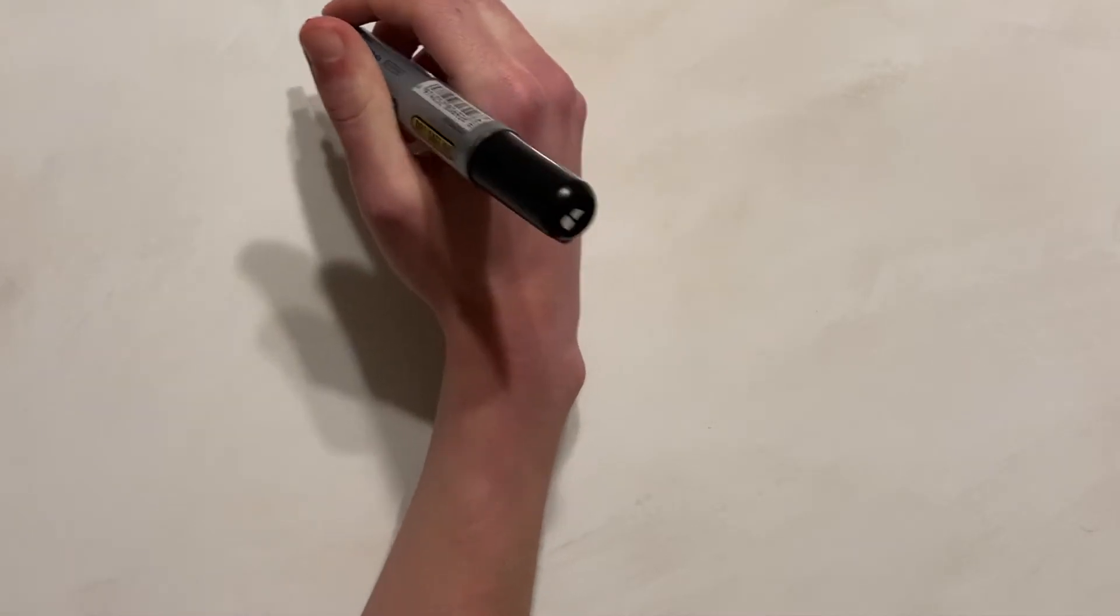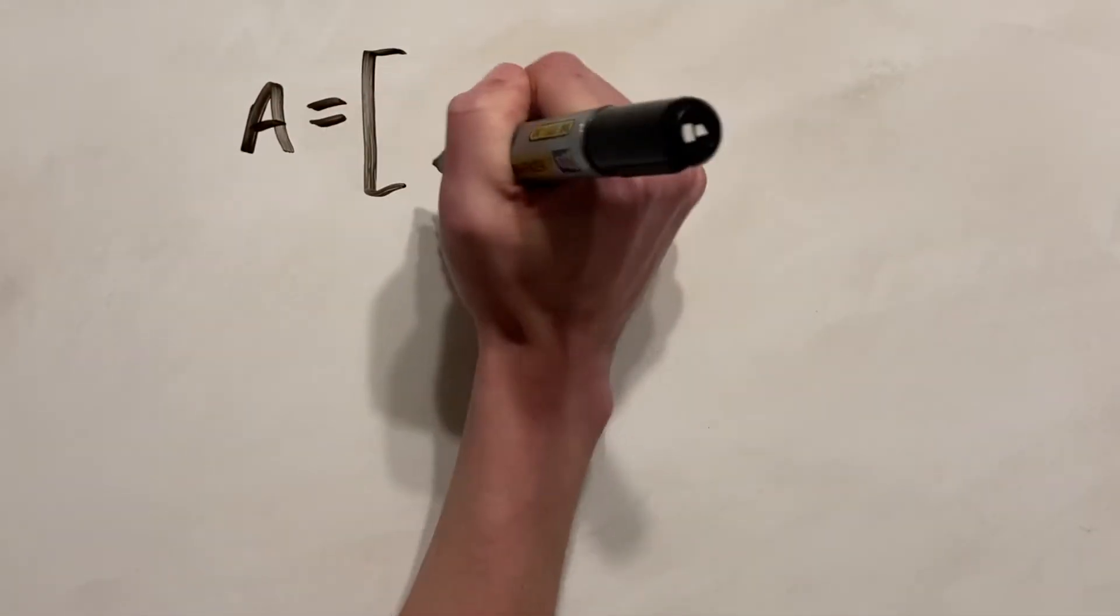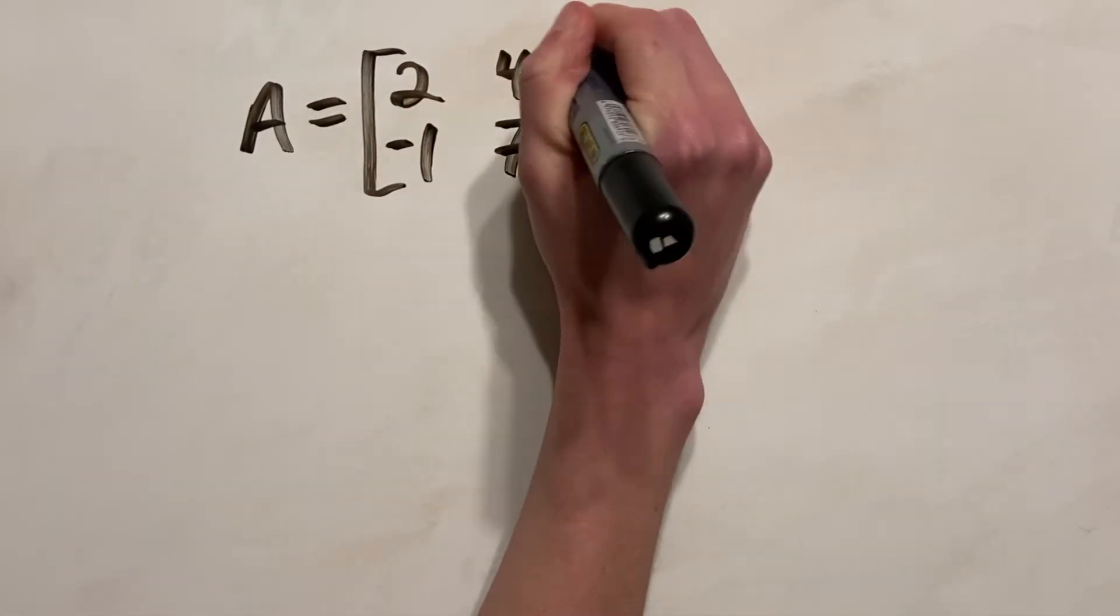Hello and welcome. In this video, I'm going to be showing you how to find the inverse of a 2 by 2 matrix. So let's say we have the matrix A which is equal to 2, 4, negative 1, and 7.